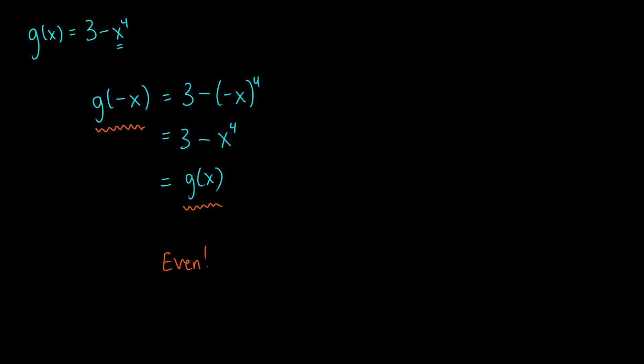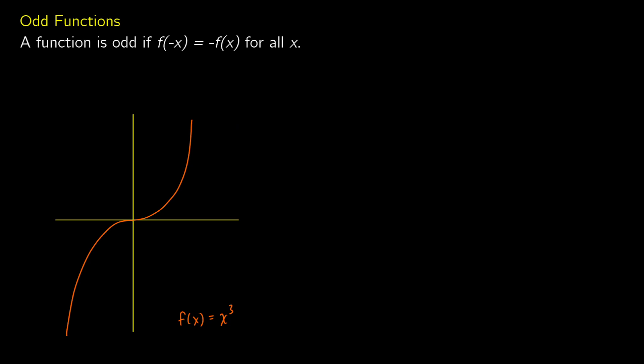That's the process for checking even functions. For odd functions, we check whether f of negative x equals negative f of x. This is like a mirror image diagonally across the origin. We start with f of negative x, do some algebra, and then show that it equals negative f of x.